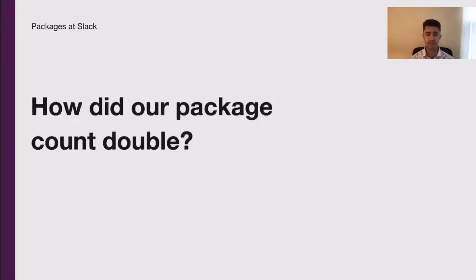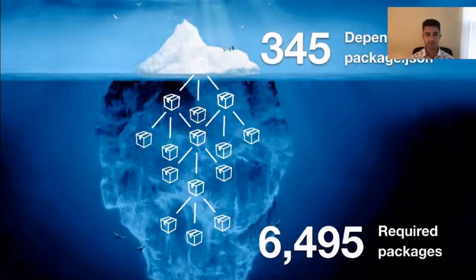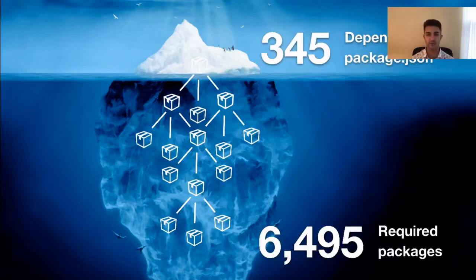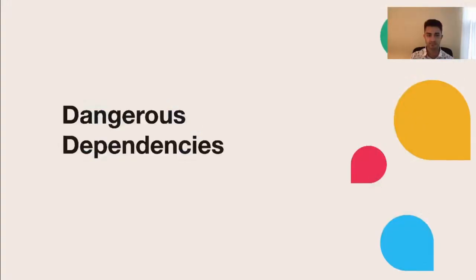So how did our package count double? In a word, NPM. We only directly require 350 packages in our package.json. However, when you resolve the nested dependencies, our dependency tree expands to almost 6,500 unique versions of packages. Running this much third-party code can be a risk. The downside of using common software is that we often find out about vulnerabilities at the same time as everyone else.